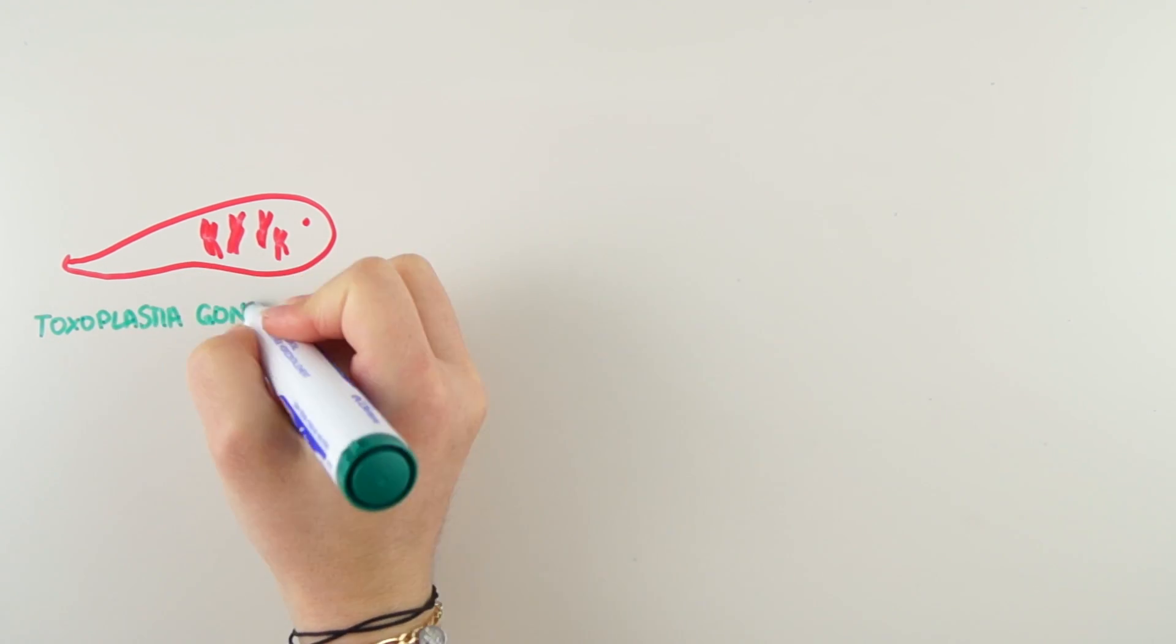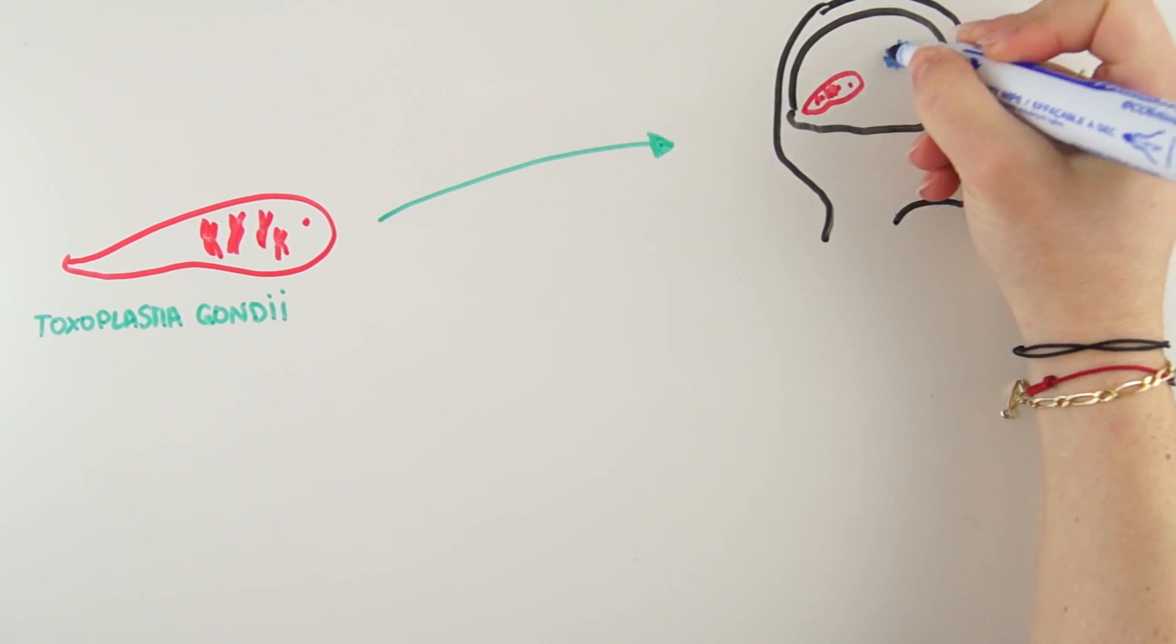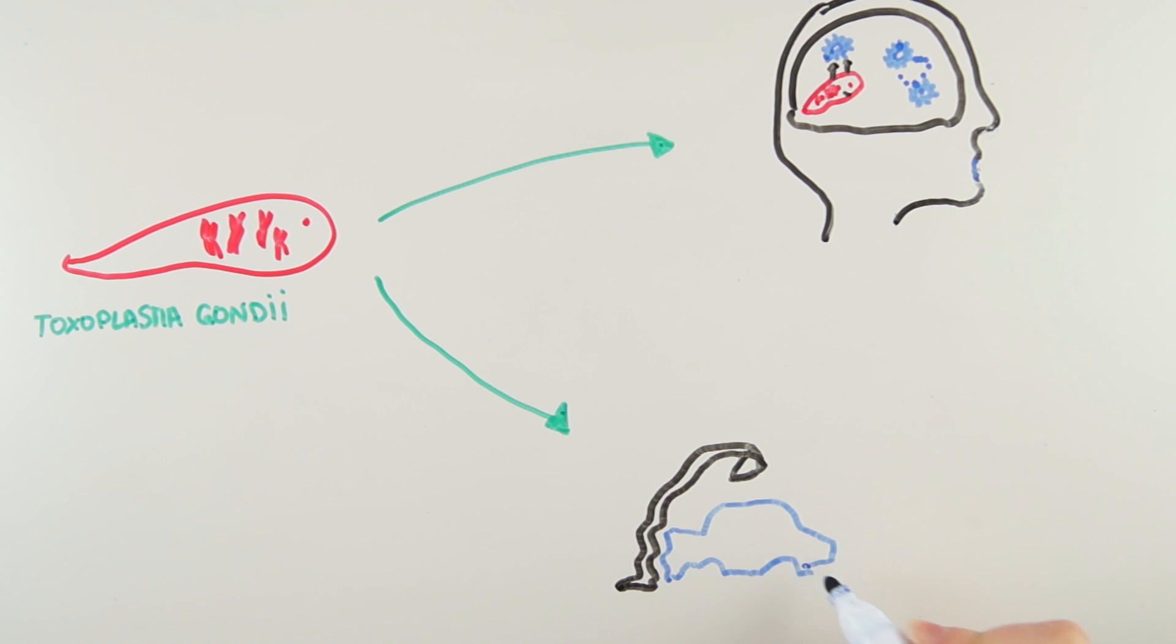For example, there are correlations between the infection of Toxoplasma gondii and schizophrenia, and other more bizarre correlations like a high probability to get involved in car crashes when infected.